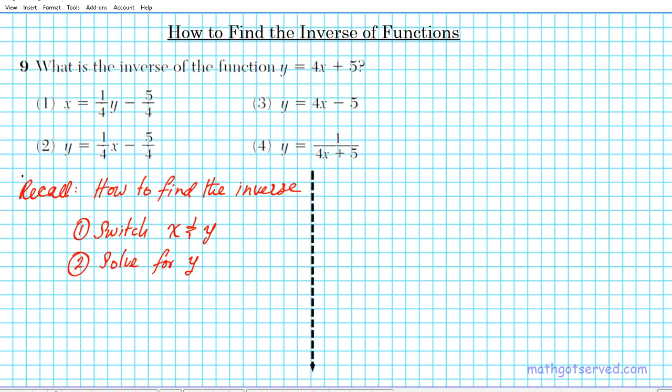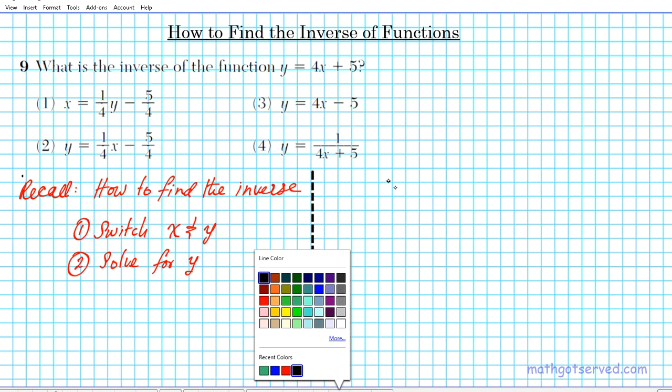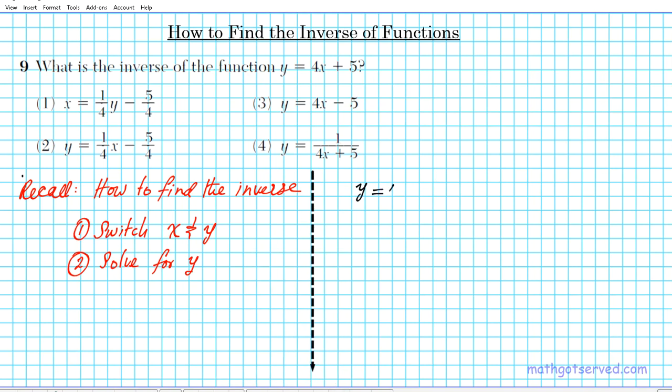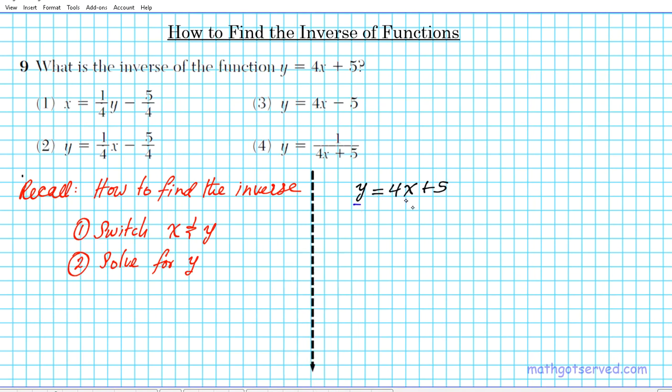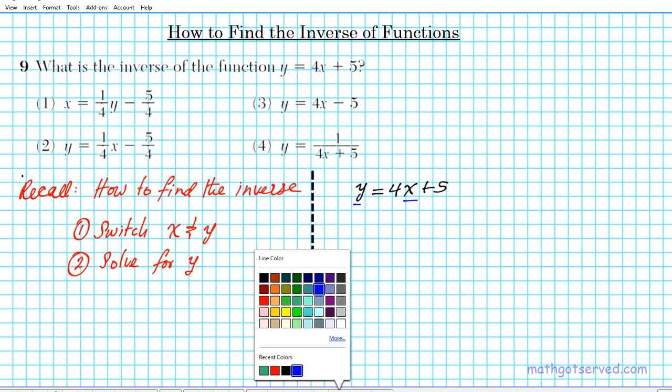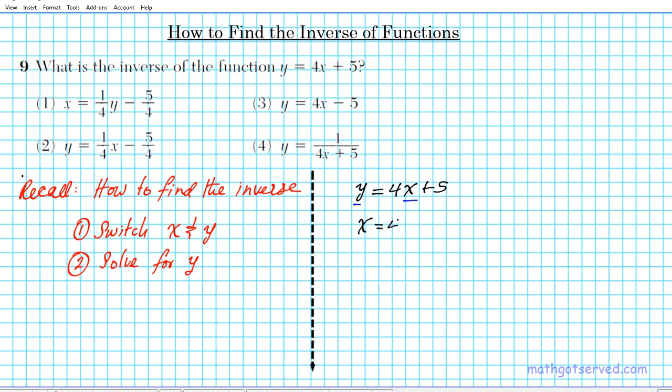The linear function we are inverting is y equals 4x plus 5. We'll start by switching the x and y variables. When we carry out the switch, we have x equals 4y plus 5.